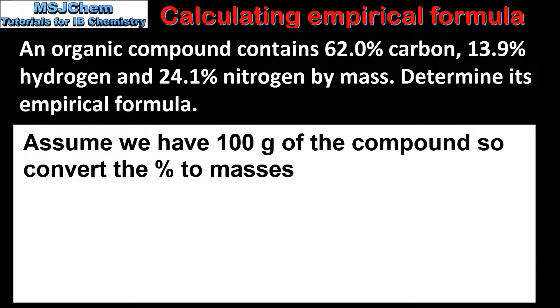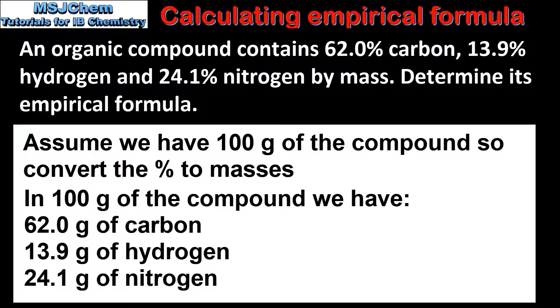The first step is to assume that we have 100 grams of the compound, so these percentages can be taken as masses in grams. So in 100 grams of the compound we have 62 grams of carbon, 13.9 grams of hydrogen, and 24.1 grams of nitrogen.